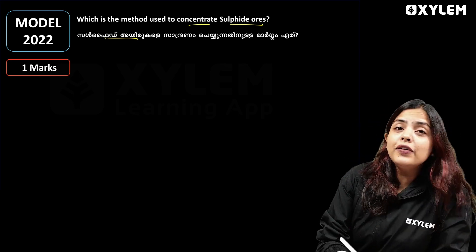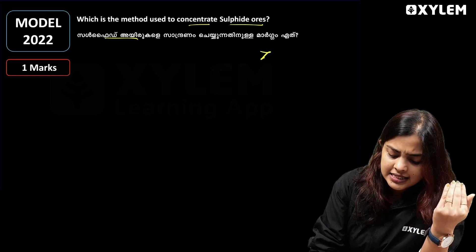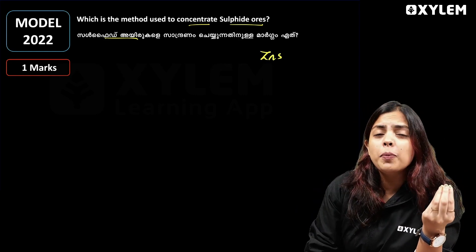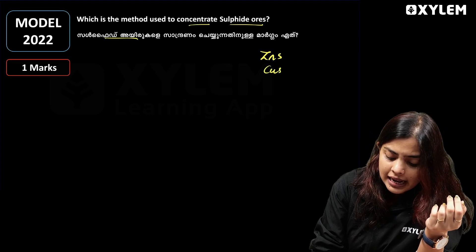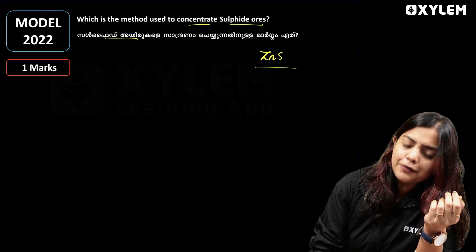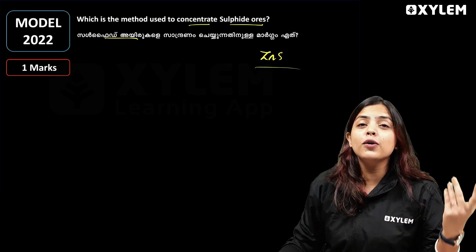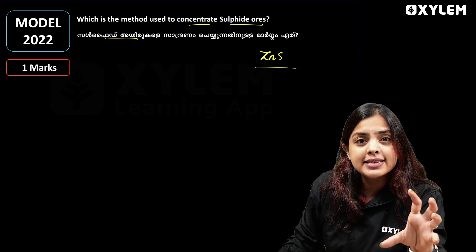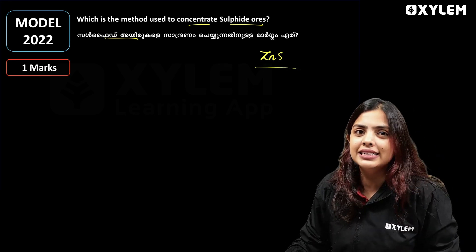Sulfide ores are different from others. We call sulfide ores copper pyrites. That is why it is called sulfide — we call sulfide as copper pyrites.